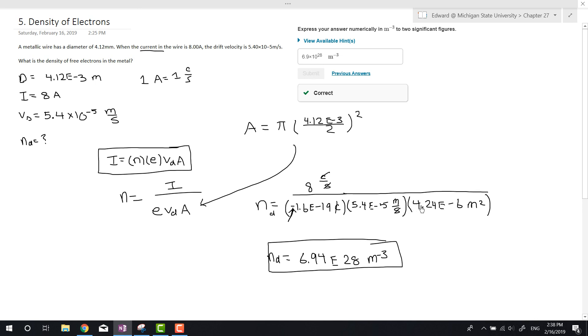One mistake I made up here was I forgot to square the radius guys, so don't make my mistake. The area, if you calculate this, is correct. I just forgot to square. So it would just be 1.33 e to negative 5 meters squared, and that will get you this.